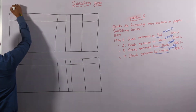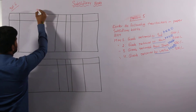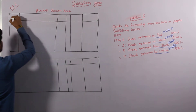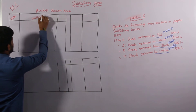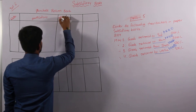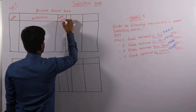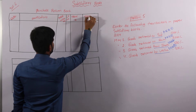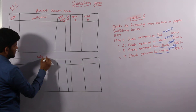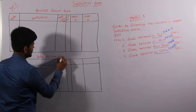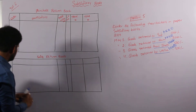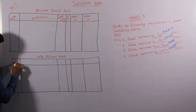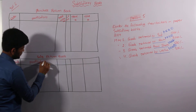Come to the pro-forma for solution number 5. This one is the Purchase Return Book. And the next one is the Sales Return Book. Set up the column headings with particulars for each book.